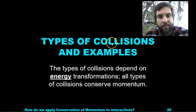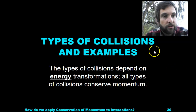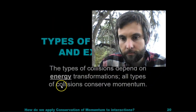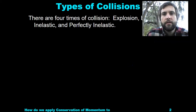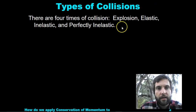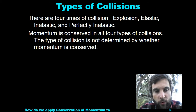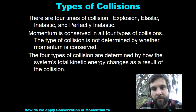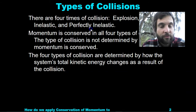Types of collisions and examples. The types of collisions depend on energy transformations. All types of collisions conserve momentum. There are four types: explosion, elastic, inelastic, and perfectly inelastic. The type of collision is determined by how the system's total kinetic energy changes as a result of the collision.